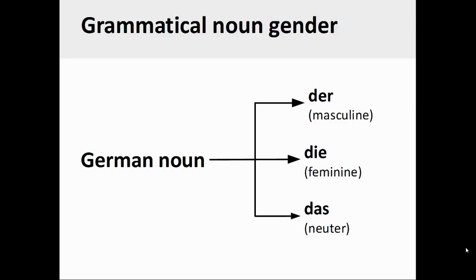The grammatical gender of a German noun determines its definite article. Masculine nouns have the definite article der. Feminine nouns have the definite article die. And neuter nouns have the definite article das.